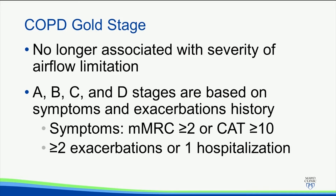For years, many of us in the pulmonary world — and probably several of you in primary care — have noticed that patients with really severe airway obstruction may have minimal symptoms and don't get hospitalized, whereas some patients with more moderate airway obstruction are in the hospital all the time, are difficult to control, and are very symptomatic. So the degree of obstruction doesn't necessarily go along with the patient's symptomatology, and the treatments are all gauged at symptoms.